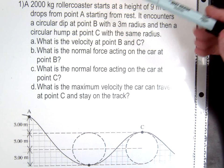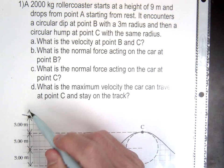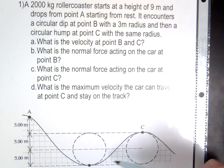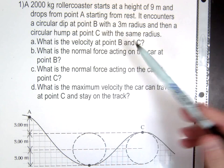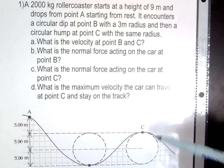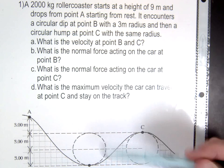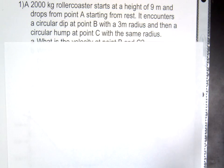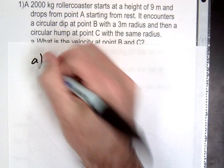Alright, so in this problem we have our roller coaster, right? Roller coaster is starting at the top, it's going to start at rest, coming down and we're just going to solve for a few things. So, first thing is what's the velocity? Point B, point C. So what are we going to use to figure this out? Energy. Okay, conservation of energy, right. So we'll just use some simple conservation of energy.